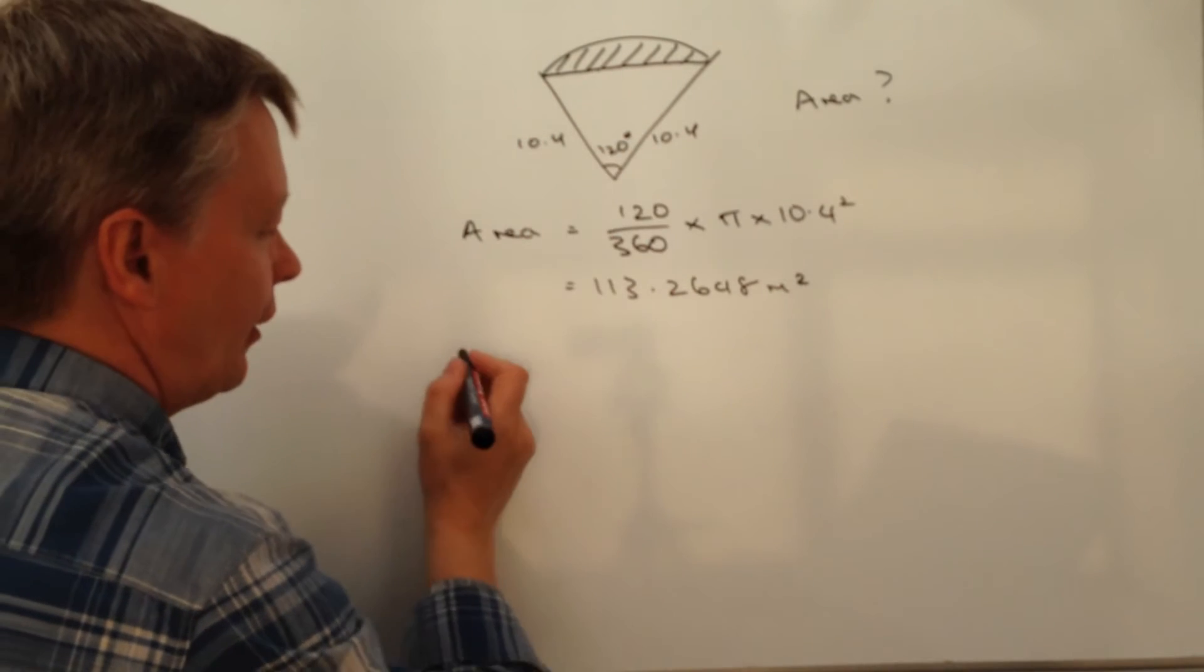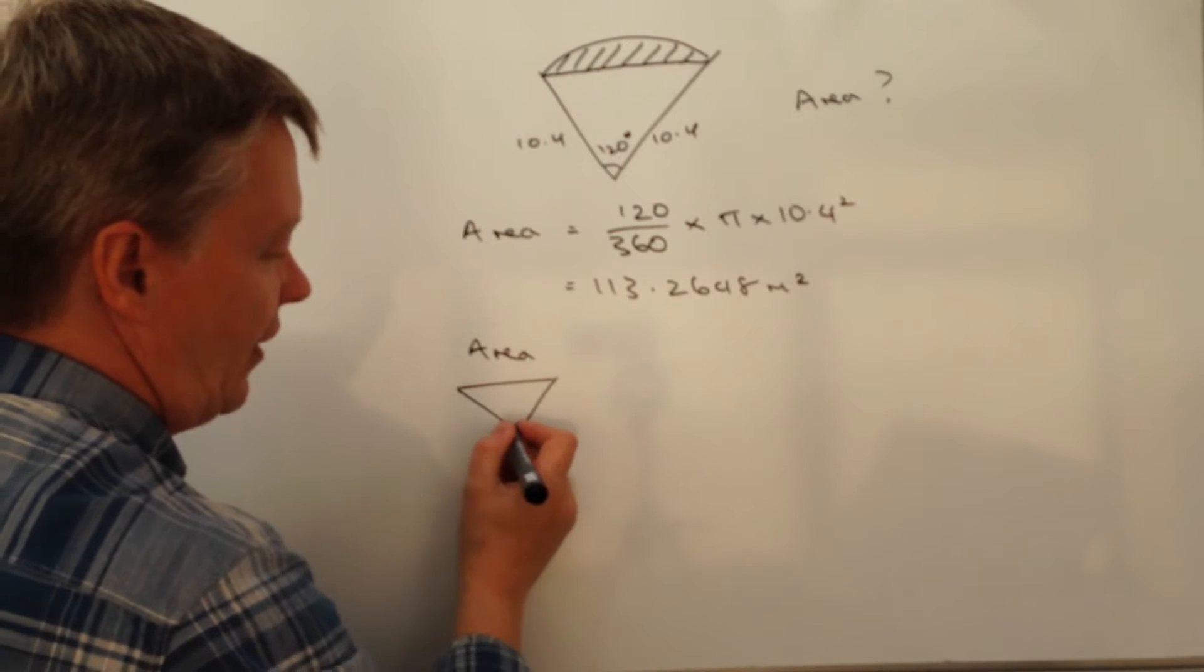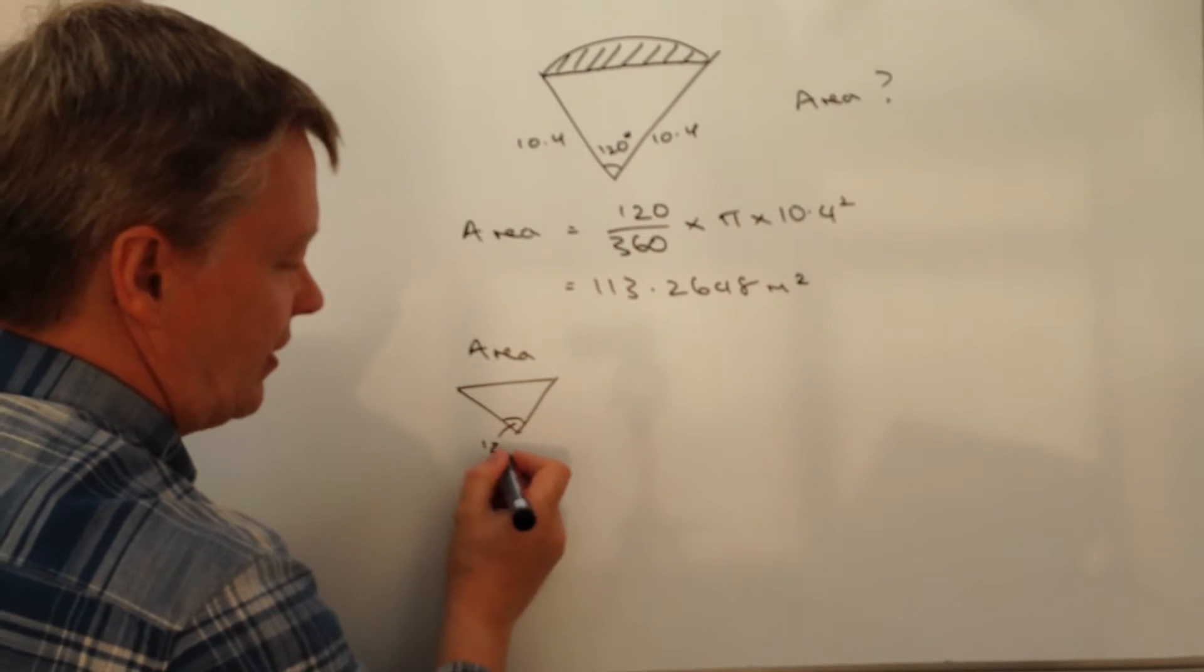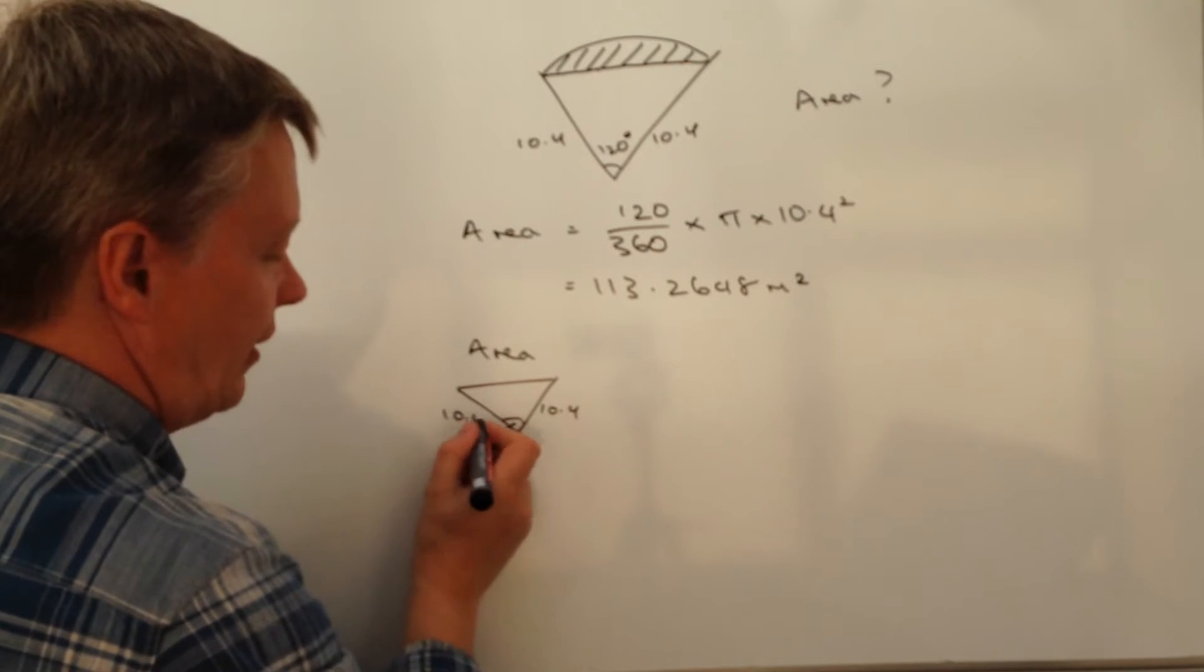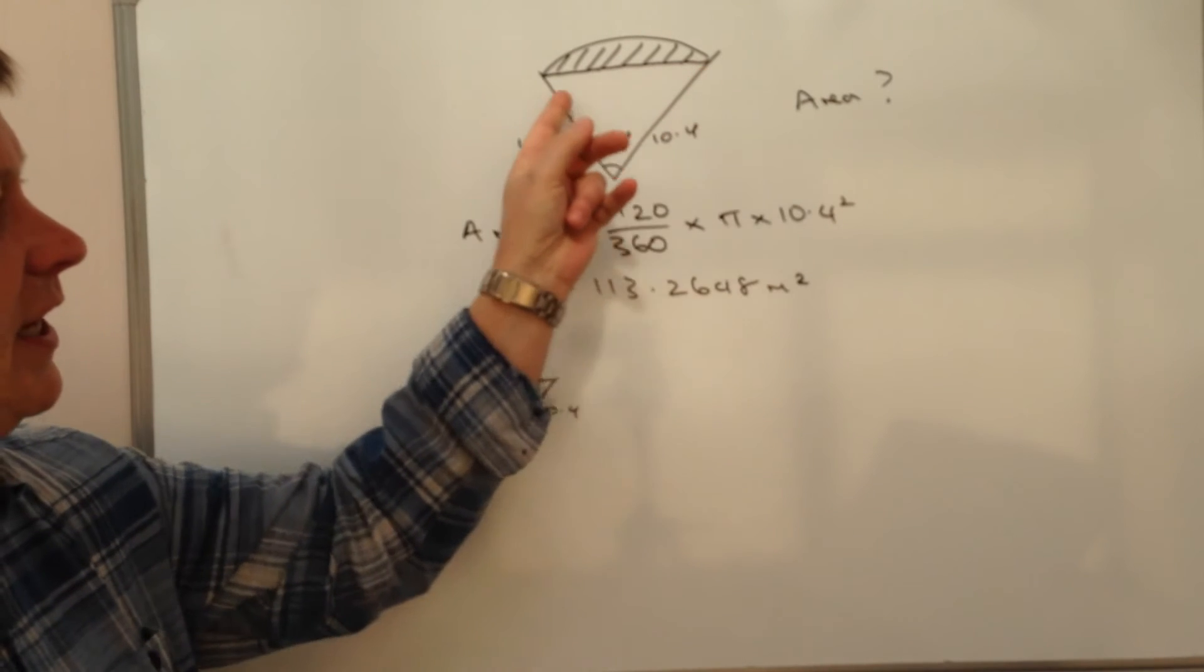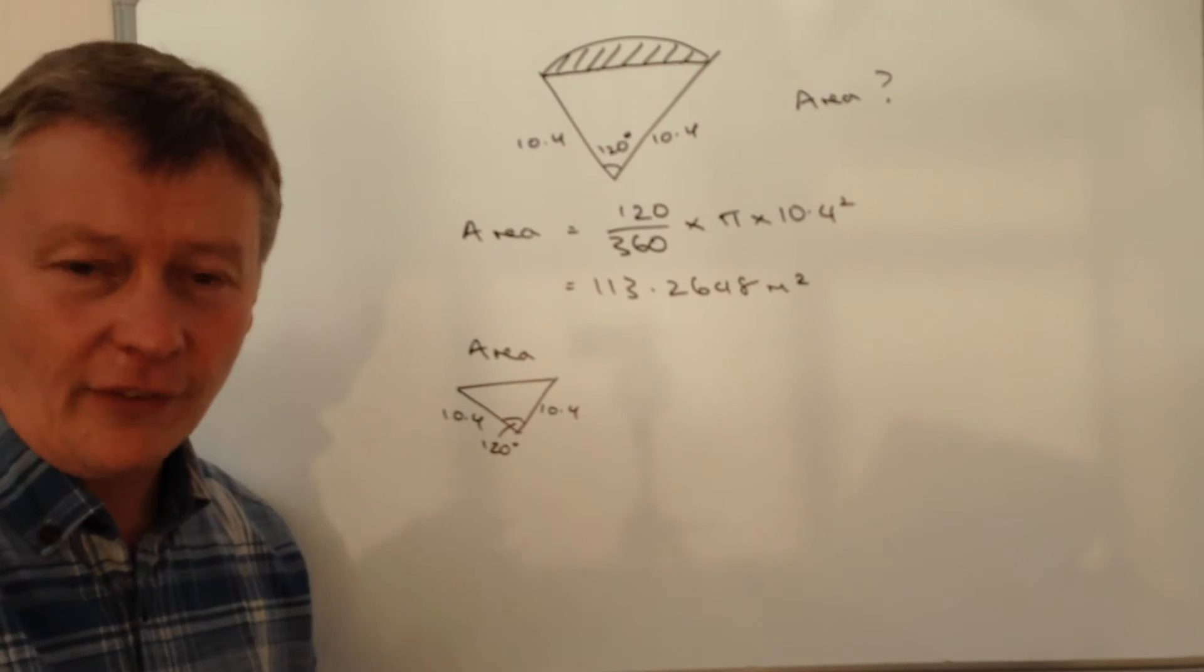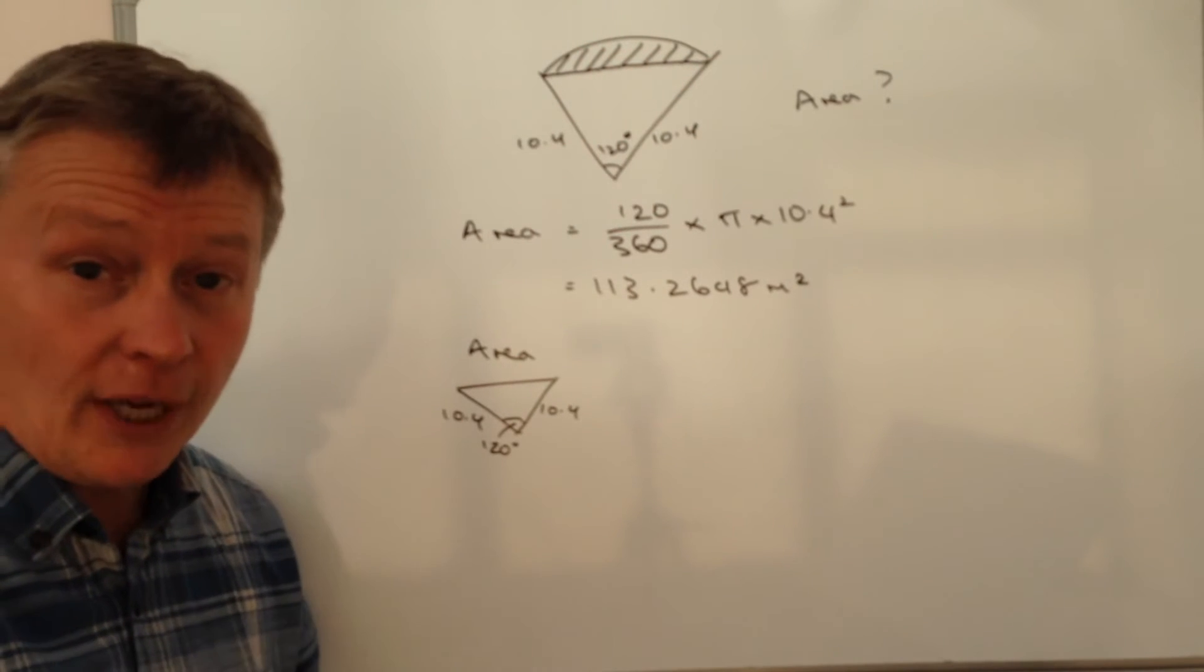And if we work out the area of a triangle, which has got this, so it's 120 degrees, and it's 10.4 at each side. Okay, so that is the area of this triangle here. And then once we work out that area, we take it away from this, and we should be able to then calculate the remainder.